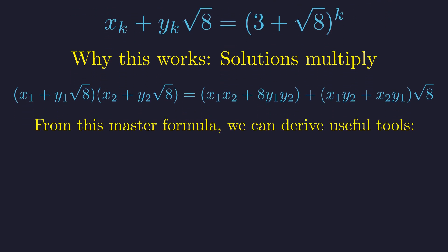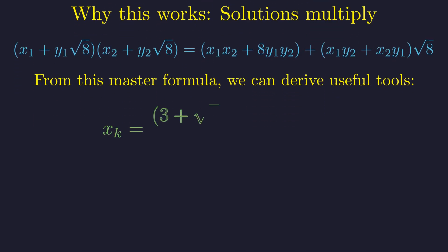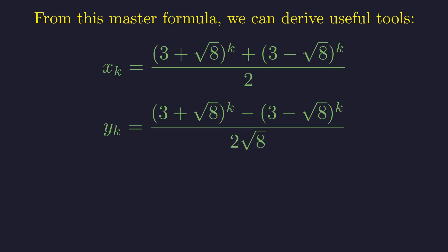From this master formula, we can derive other useful computational tools. Explicit formulas for any term: x sub k equals the sum of the conjugate powers divided by 2, and y sub k equals the difference of the conjugate powers divided by 2 root 8. These guarantee integer results.